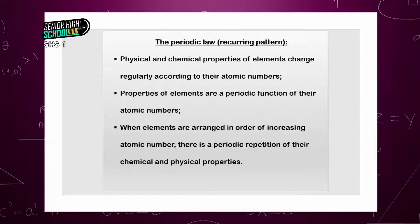So, it is the atomic number that gives us a specific element on the periodic table. For example, if I say state the element with atomic number 11, you will not go and mention any other element than sodium — you tell me it is Na. What is the atomic number of magnesium? You will tell me magnesium has atomic number 12. What about chlorine? 17.